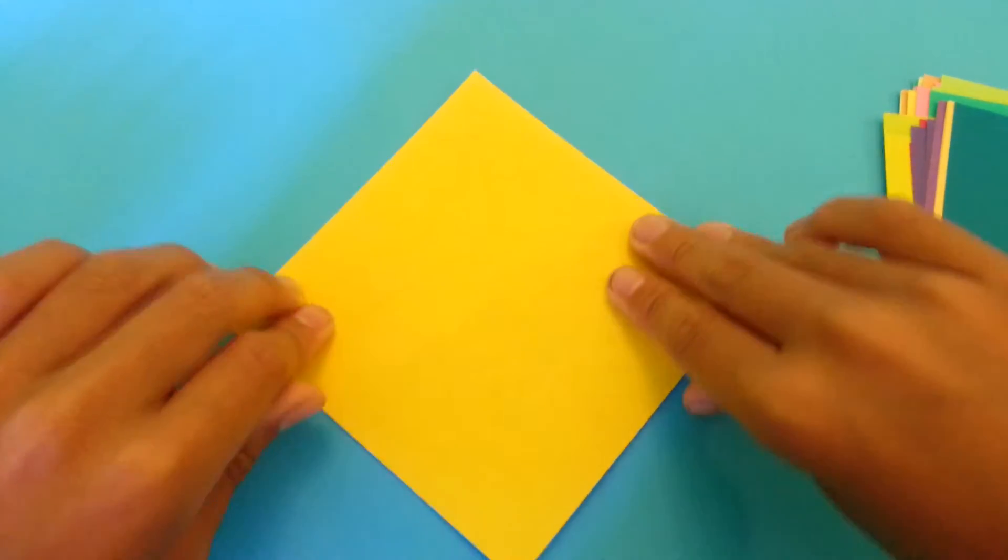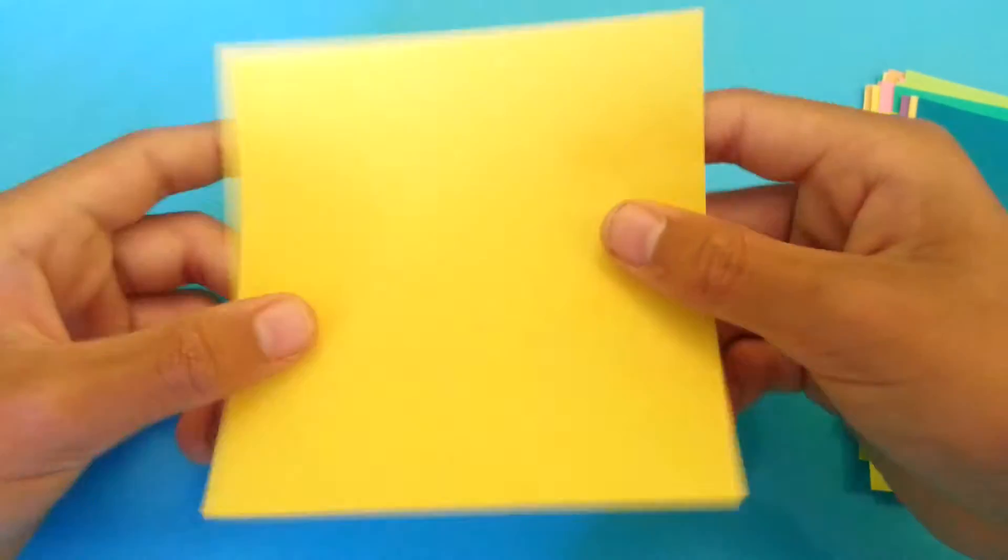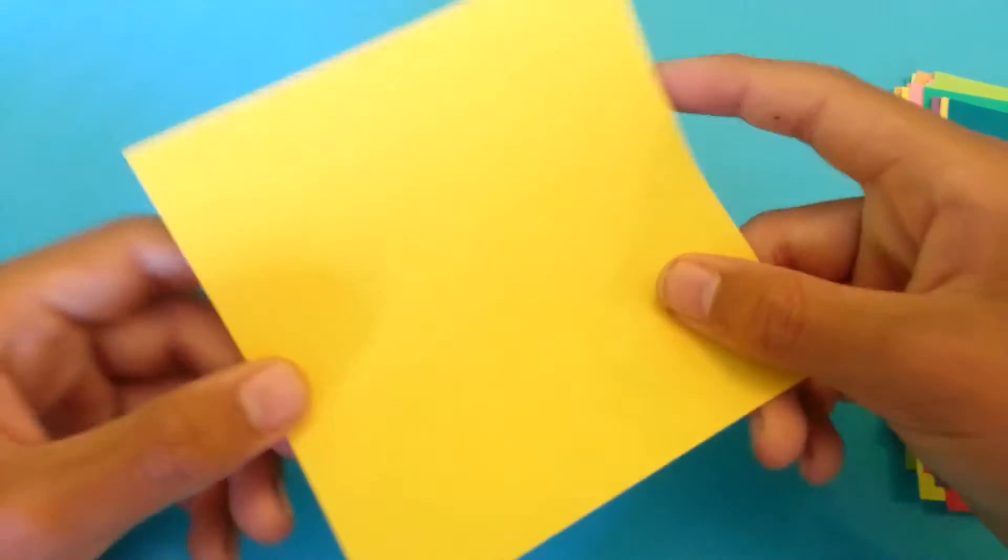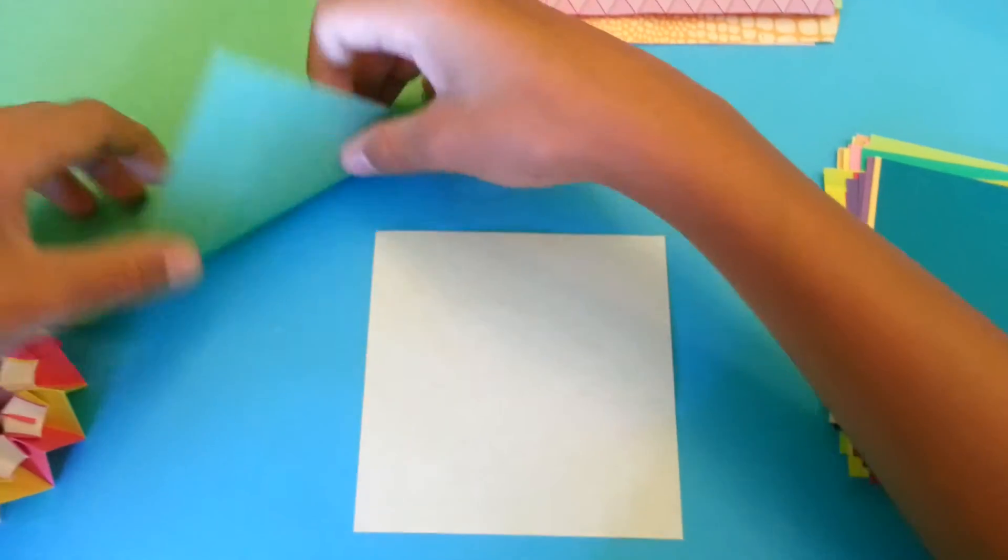Let's start with the paper that you want to use, about 10 centimeters like I have right here. You really want to use a paper with color on both sides, because it will end up like this.